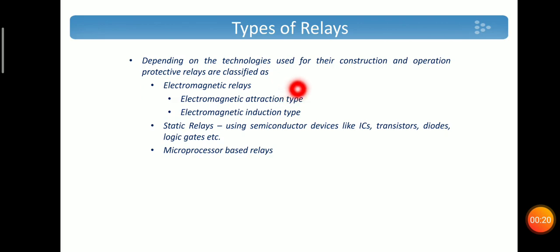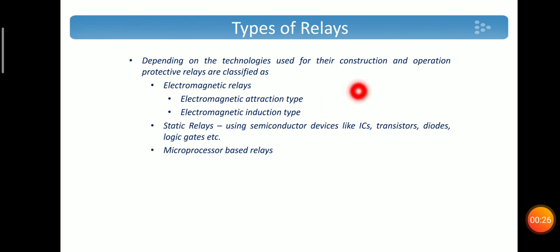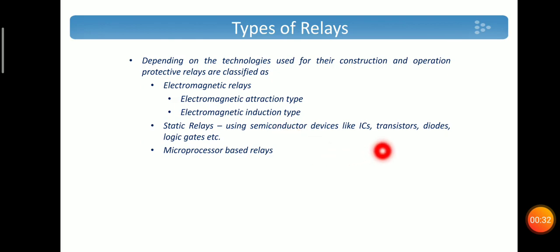Electromagnetic relays are of electromagnetic attraction type and electromagnetic induction type. Static relays use semiconductor devices like ICs, transistors, diodes, logic gates, etc.